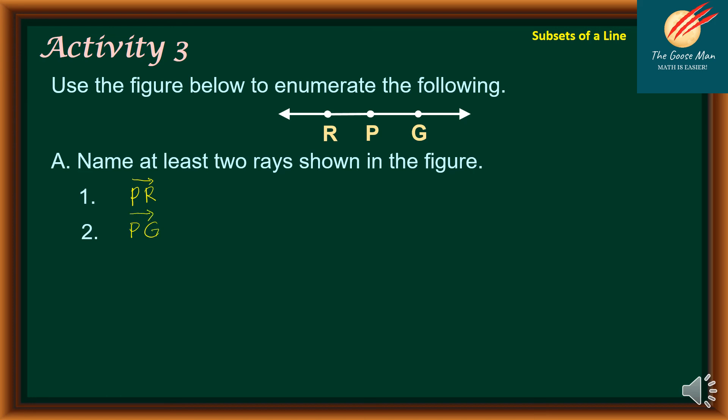There are other possible answers. Since we need to write only at least two rays, we have ray PR and ray PG.